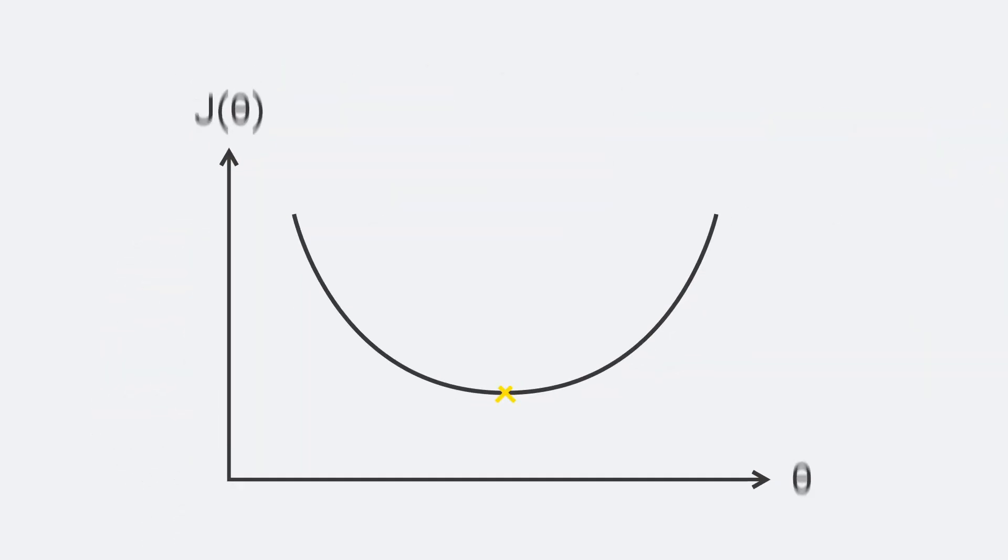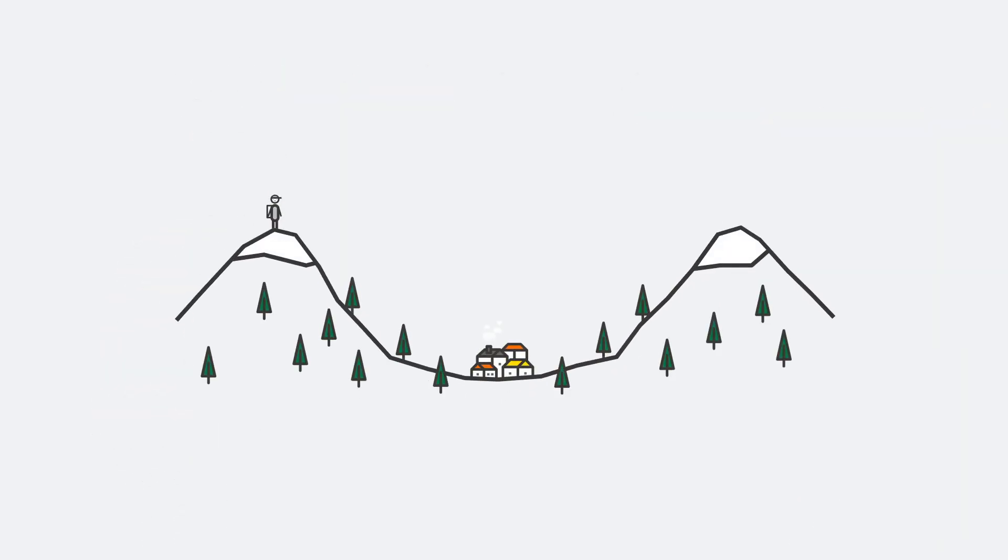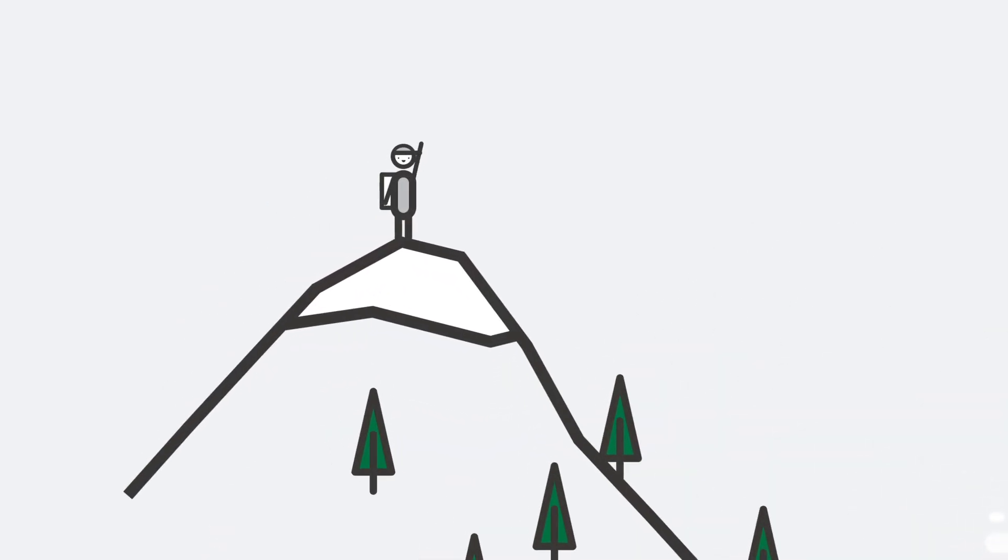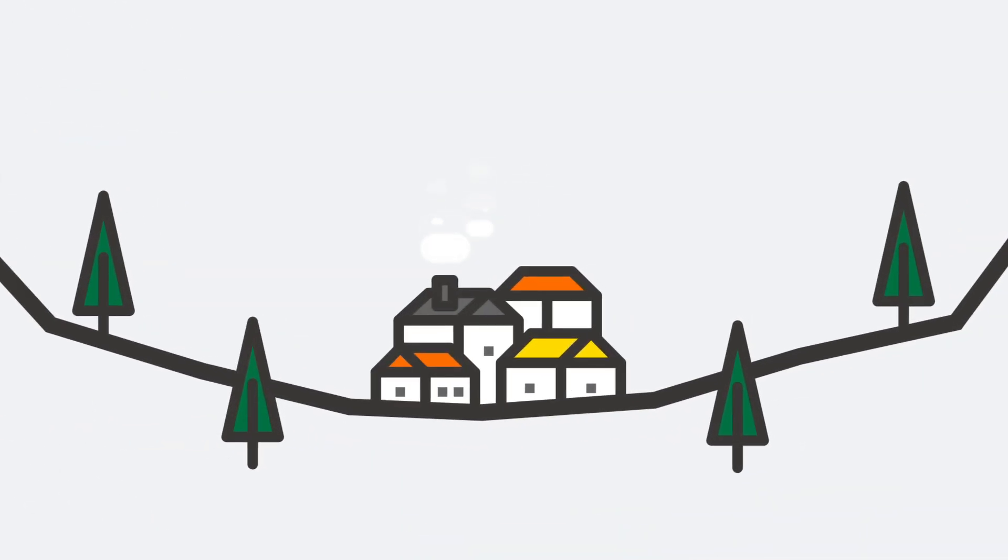Let's think of gradient descent as a climber on a mountain. The mountain is the cost function. The climber wants to reach the village in the valley, that is to say, the minimum value of the cost function.